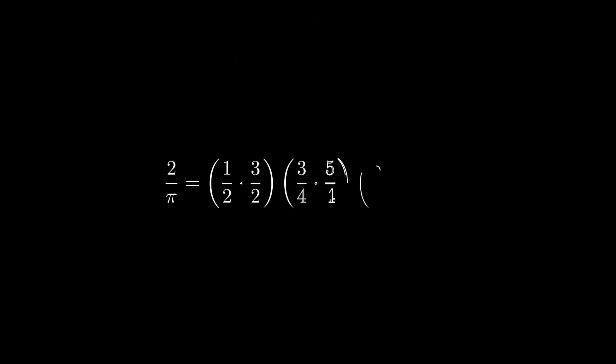Applying this to our equation, we get 2 over pi equals 1 half times 3 halves times 3 fourths times 5 fourths times 5 sixths times 7 sixths, and so on.